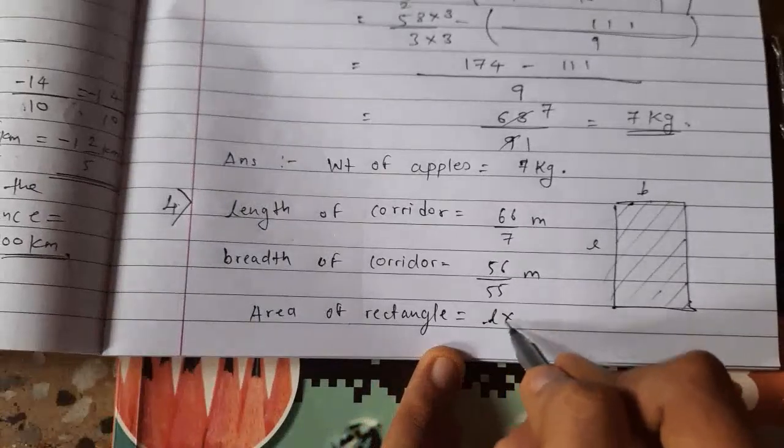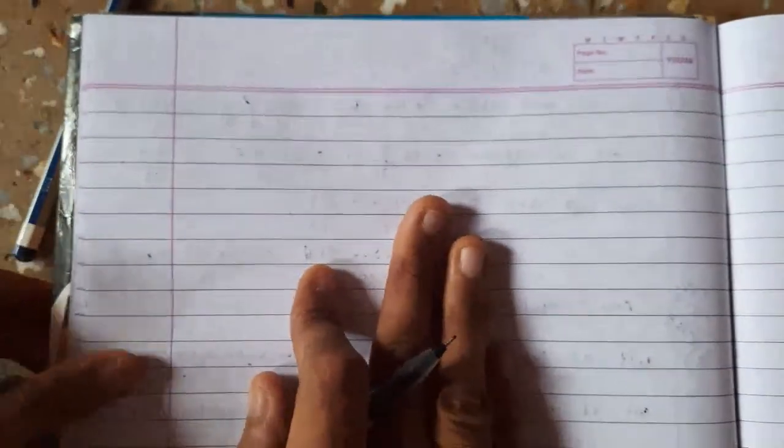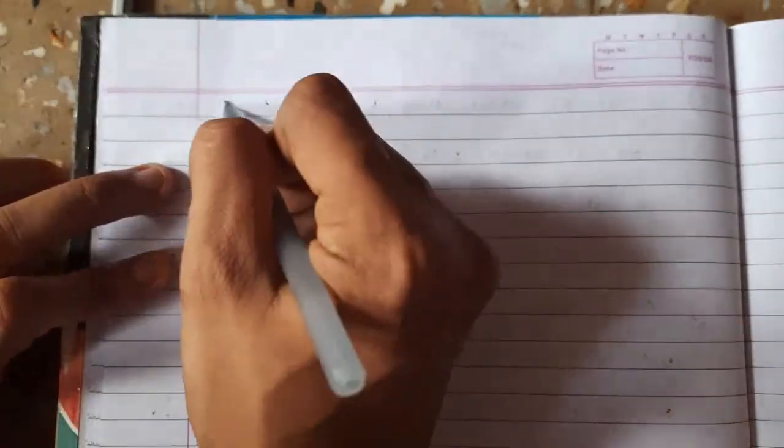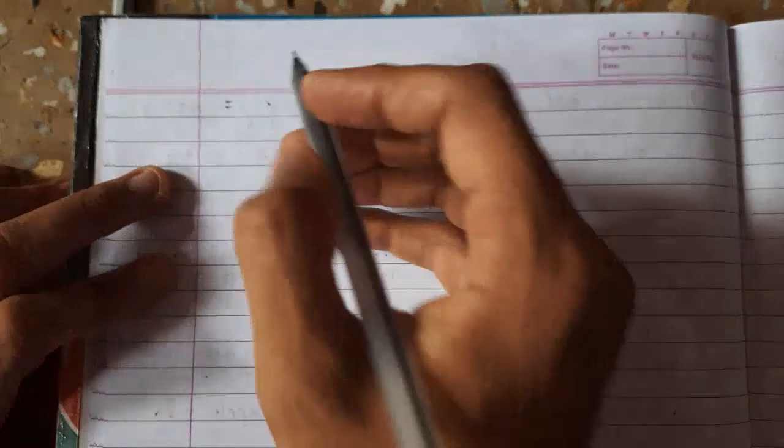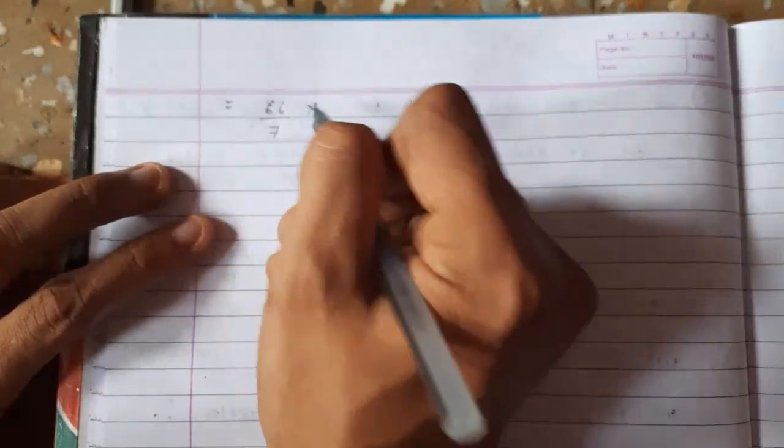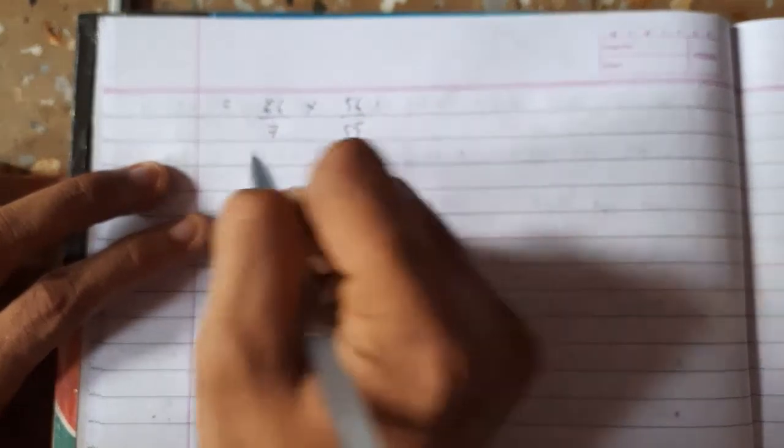The area of rectangle is length into breadth. So this you have to multiply. Both things have to multiply. Very simple question. Now, how to multiply this? I will multiply.